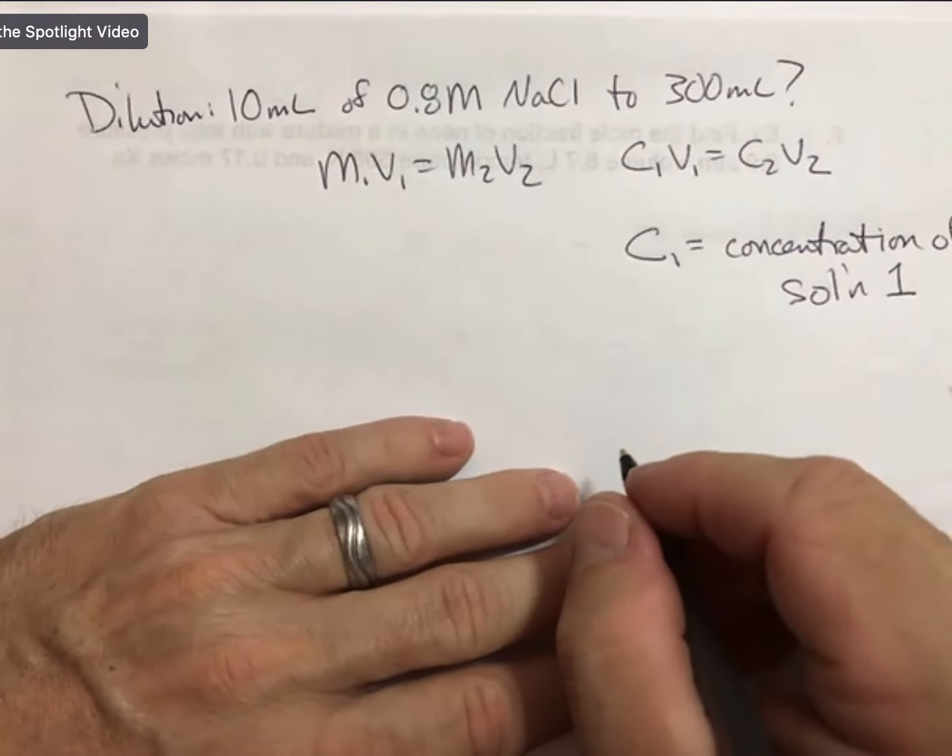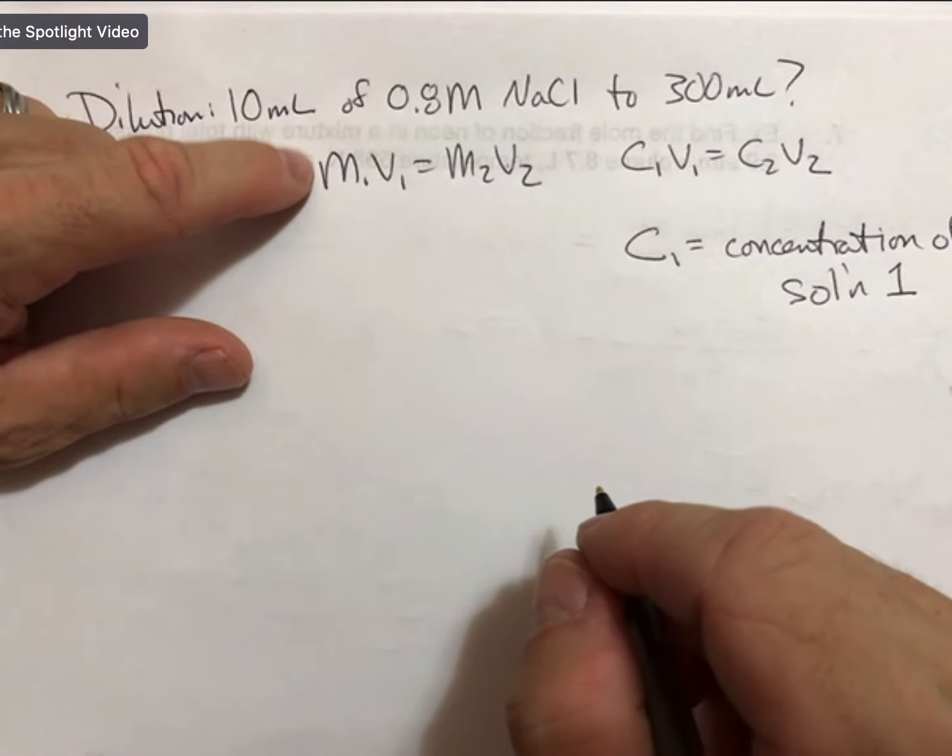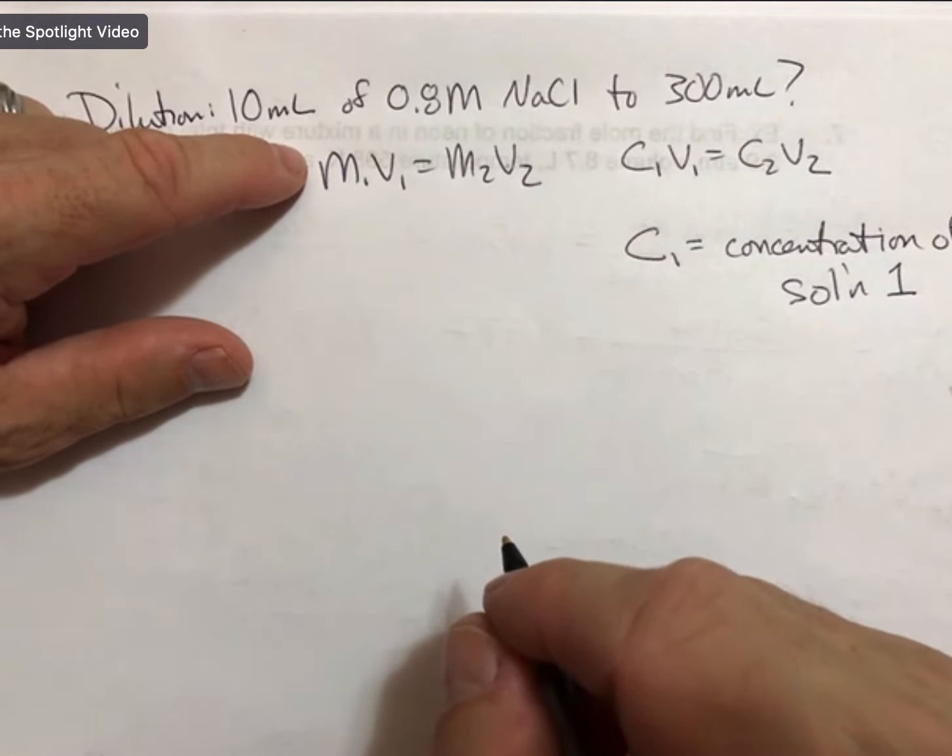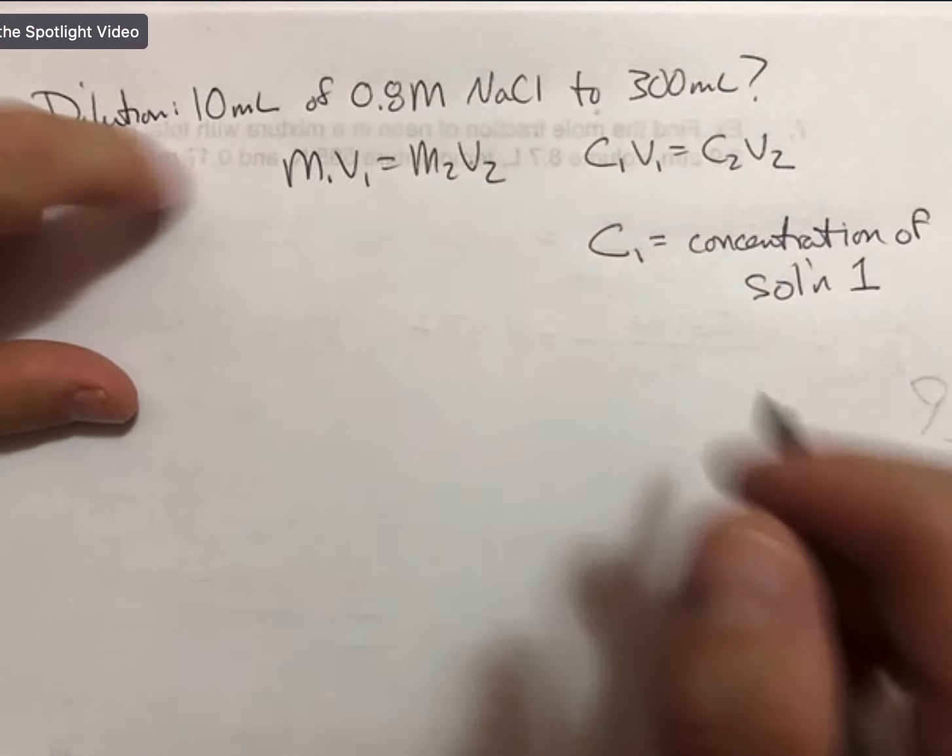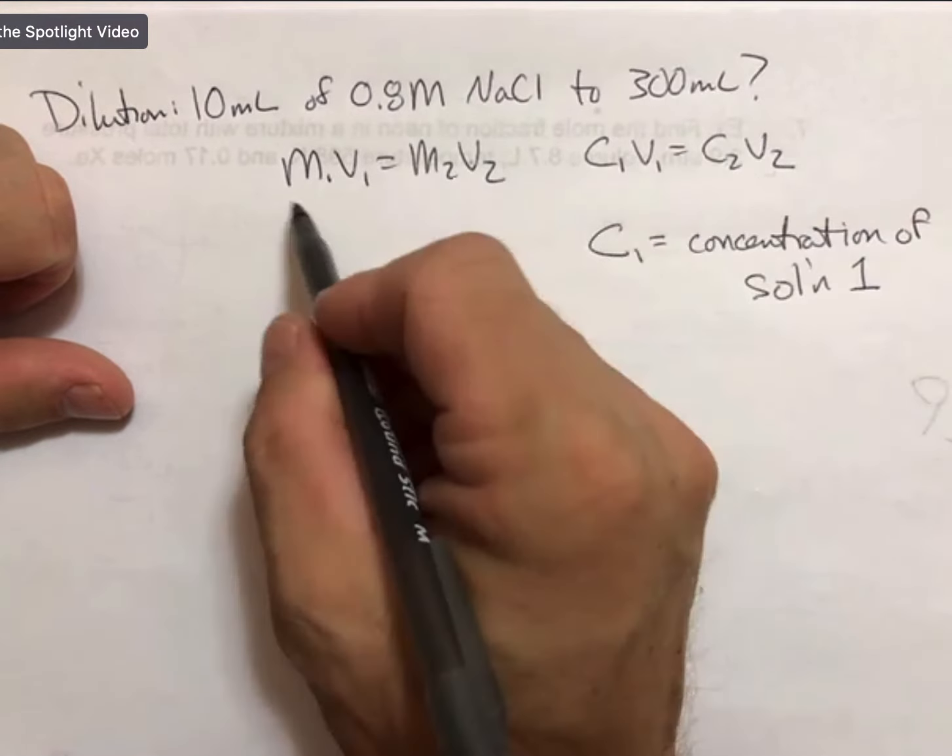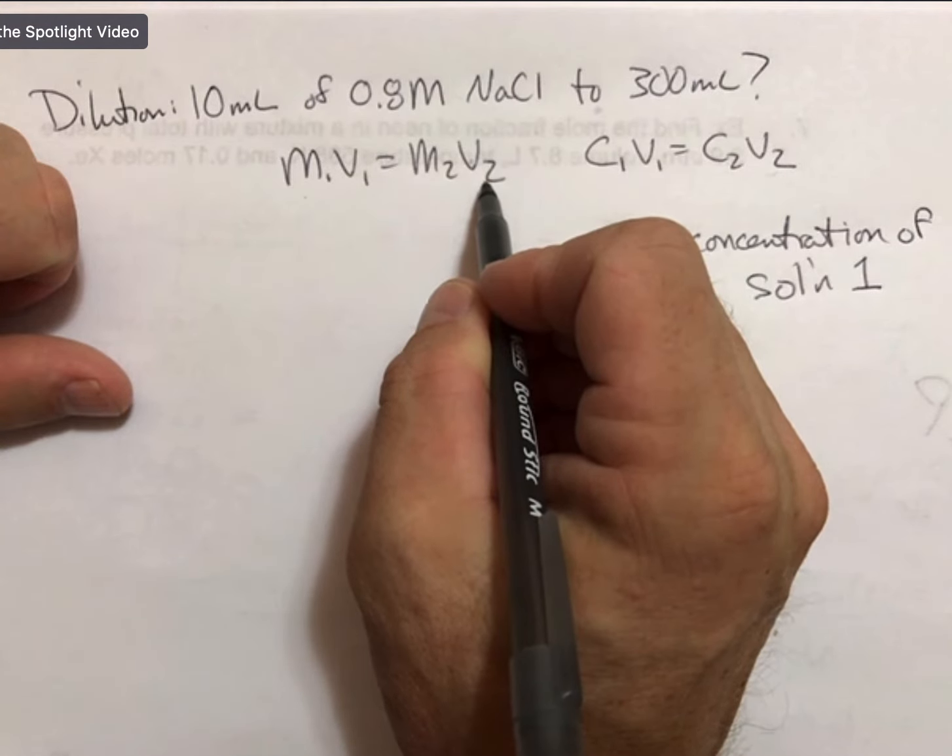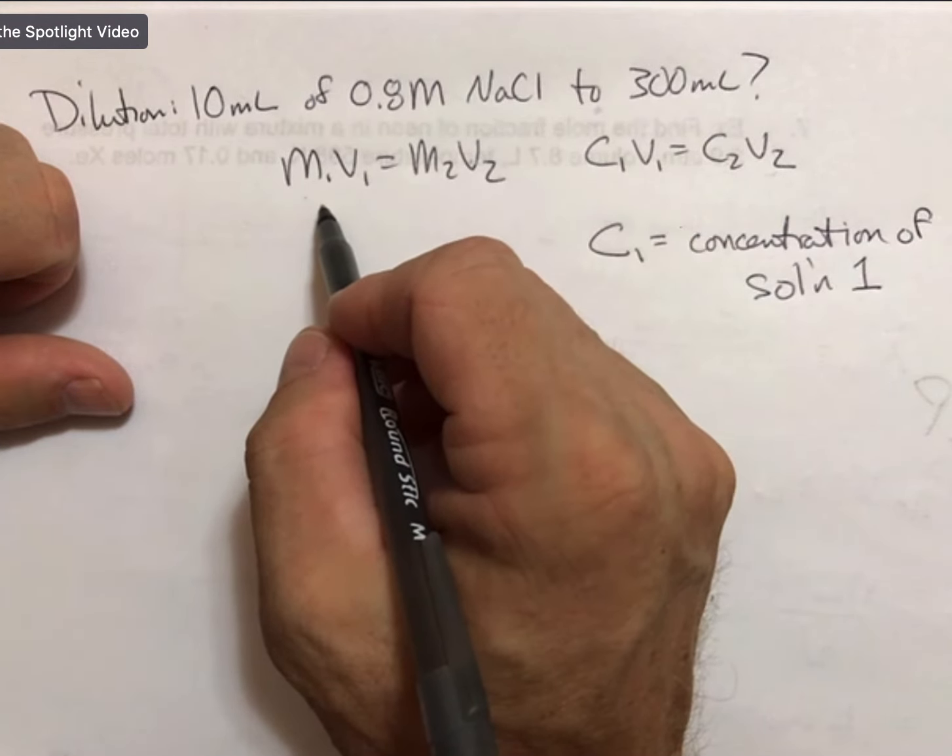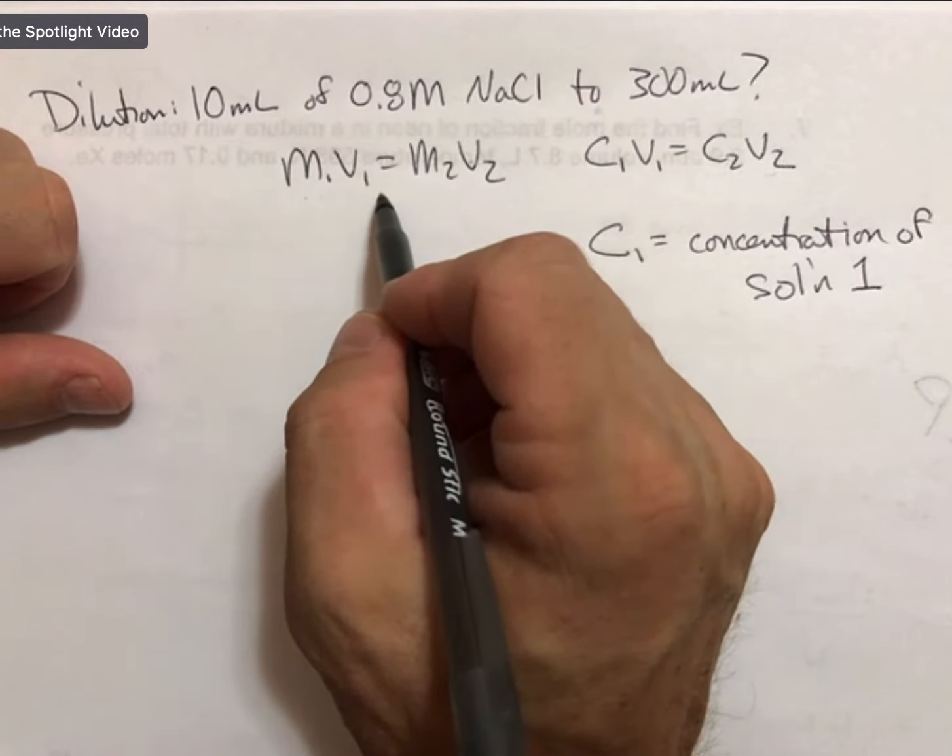Which tends to be the more concentrated one. M, capital M here, specifically means one unit of concentration, which is molarity. So C1V1 equals C2V2 is the more general case. M1V1 equals M2V2 is the more specific case. Since almost everything we do in this course deals with molarity, this is a fine one.